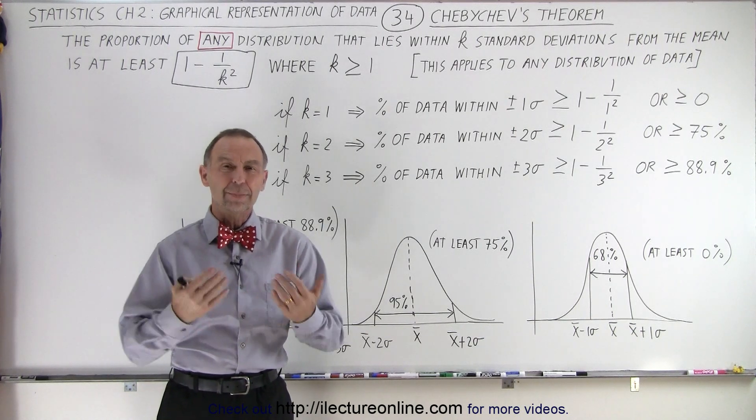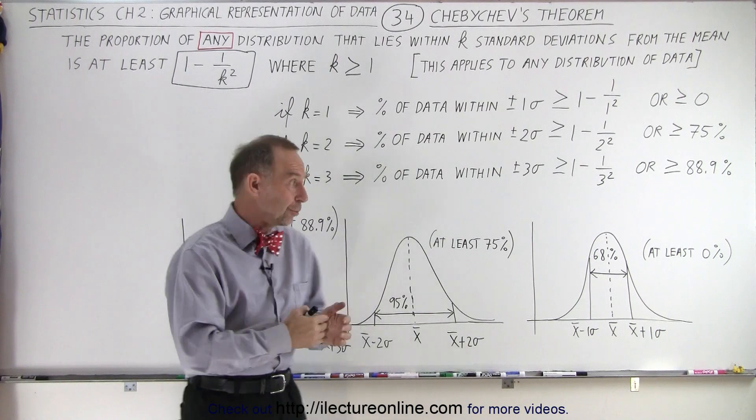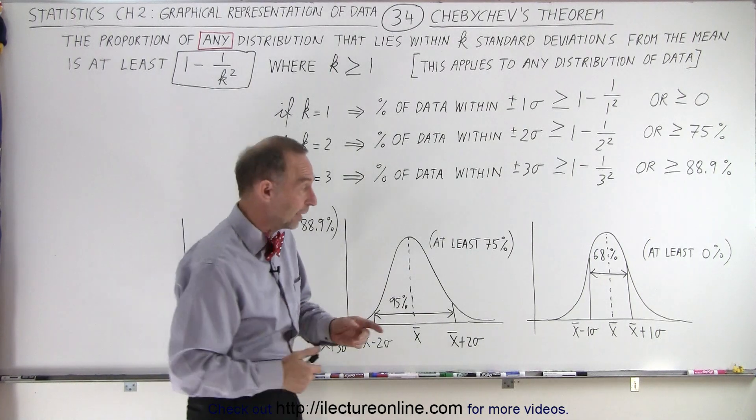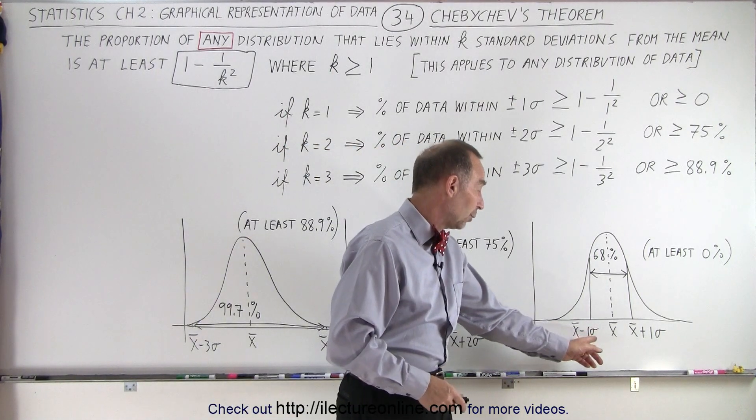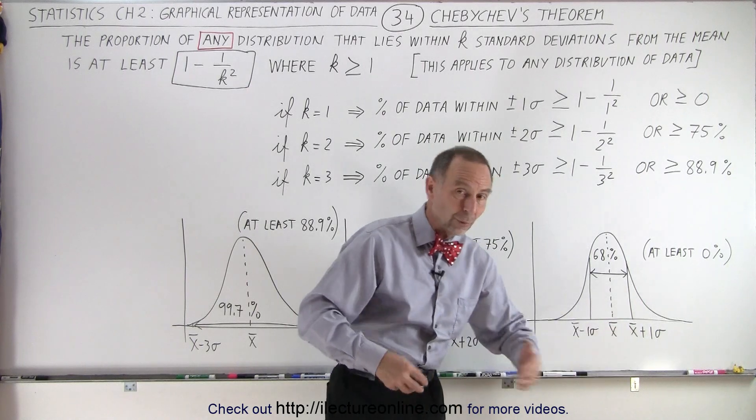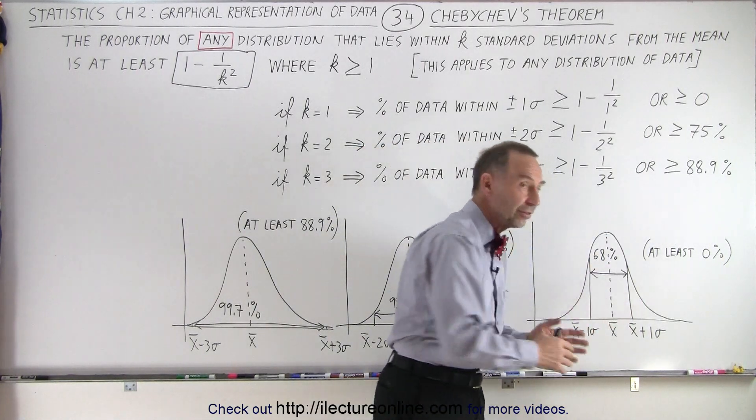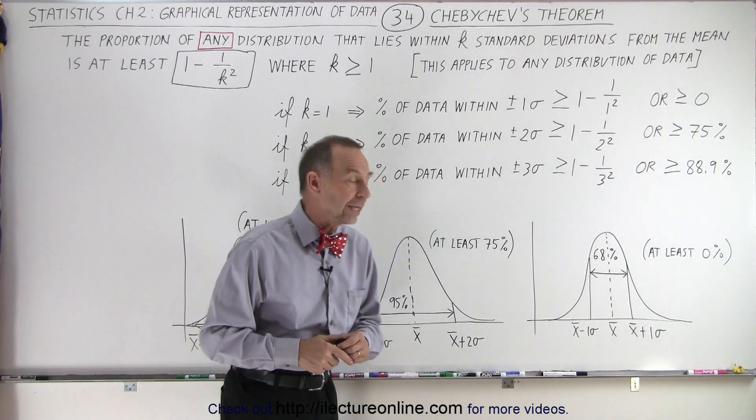Going back to the standard deviation for a normal distribution, we know that if we have data within plus or minus one sigma, one standard deviation, we expect 68% of all data to fall within that range.